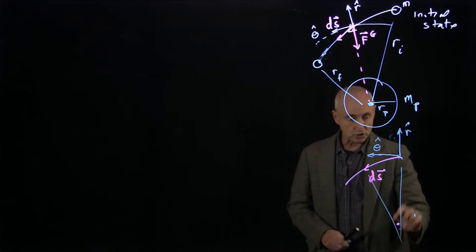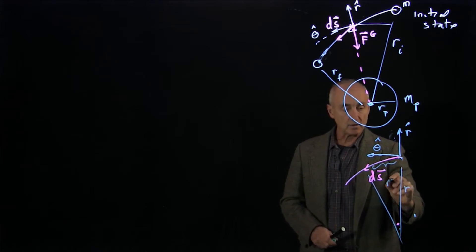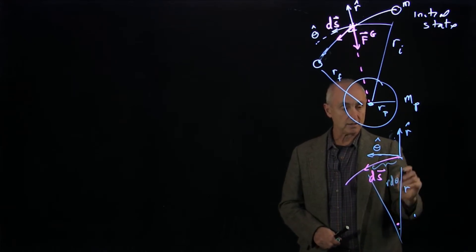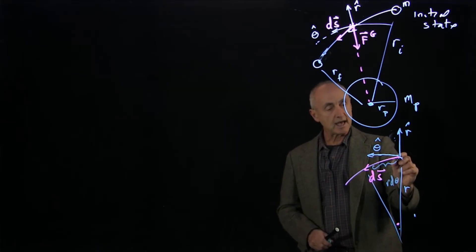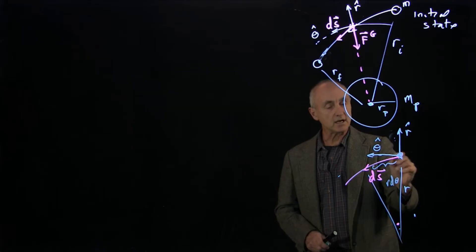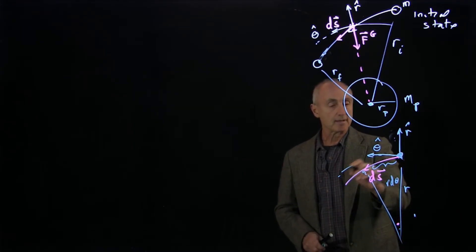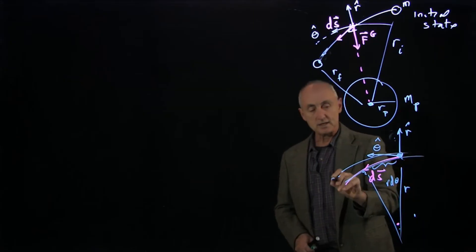To exaggerate this picture, if this is r, then the arc length here is r dθ. And the difference as the object moves from one point here to a closer point towards the center will be dr.